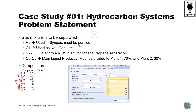The liquid mixture C6 up to C8 is the main liquid product and must be divided into two plants. Plant number one receives 70% — probably the original plant with increased production rate — and a second plant receives the remaining 30%. The important part is to ensure that 70% goes to plant number one and 30% to plant number two.